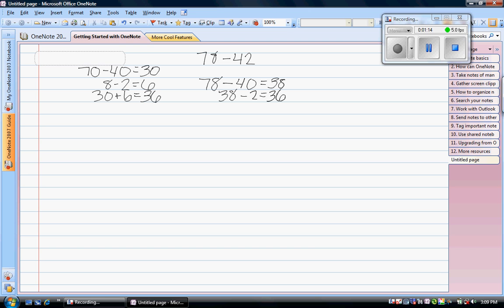Another strategy that we like to use is what we call jumping, and basically we're using addition to get from the smallest number to the largest number. So if we started at 42 and added 8, that would give us 50. Then we could add 20 more to get to 70, and then of course 8 more to get to 78.